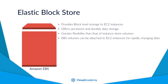EBS volumes can be attached to your EC2 instances and are primarily used for data that is rapidly changing, that perhaps requires specific IOPS. As they provide persistent level storage to your instances, they are ideally suited for retaining important data and as such can be used to store personally identifiable information. It's essential that this data is encrypted to protect it from malicious activity.